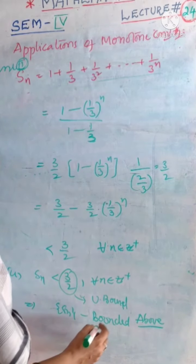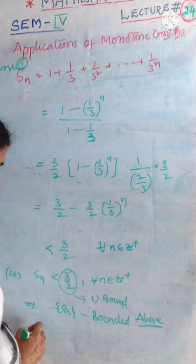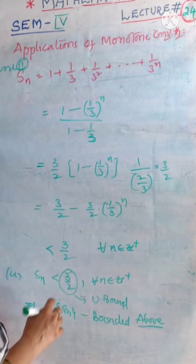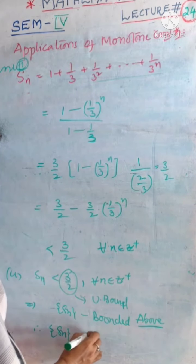We have upper bound of the sequence. We have already seen bounded below. We have bounded above sequence which is bounded below as well as bounded above. Then it is bounded.